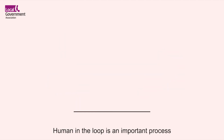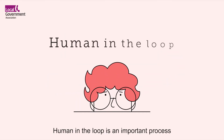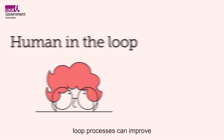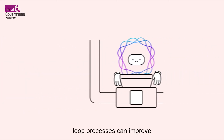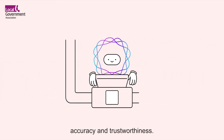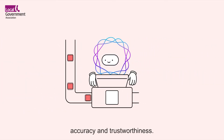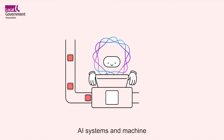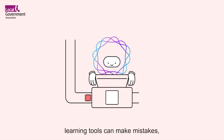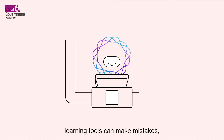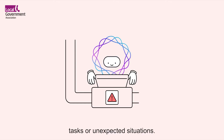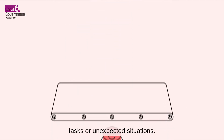Human in the loop is an important process for local government for several reasons. Human in the loop processes can improve accuracy and trustworthiness. AI systems and machine learning tools can make mistakes, especially with complex tasks or unexpected situations.